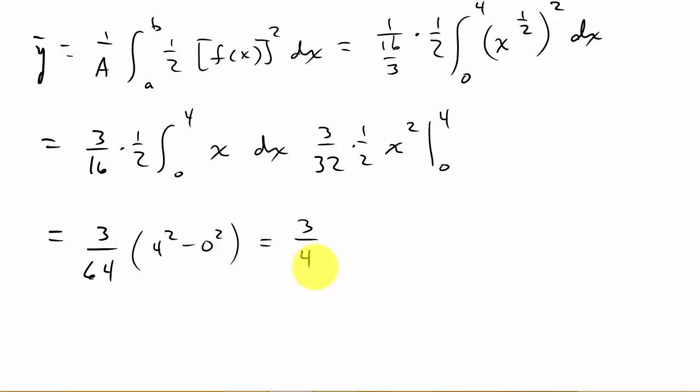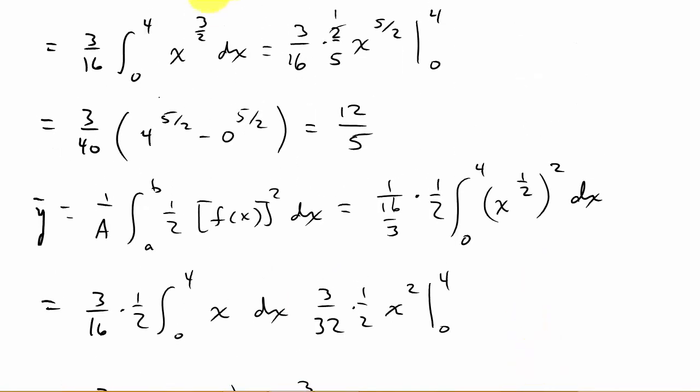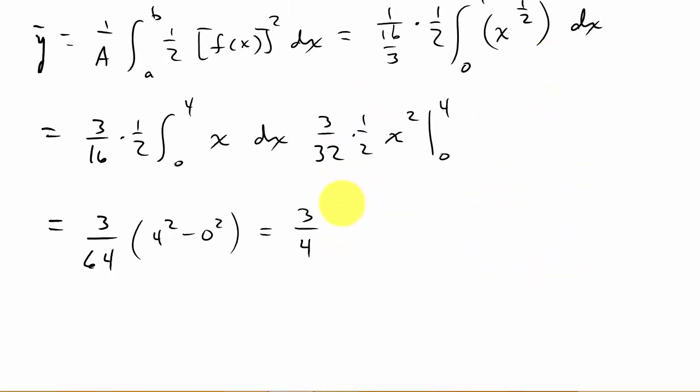And so our centroid, you can see, we calculated x bar and y bar. And so our centroid would be 12 over 5, 3 fourths. Alright. So I hope that video helped. Sorry about the little mistakes there, writing stuff down wrong. But we got it fixed. Alright. So give me a like, share, and subscribe. And I hope this video helped. Thanks.